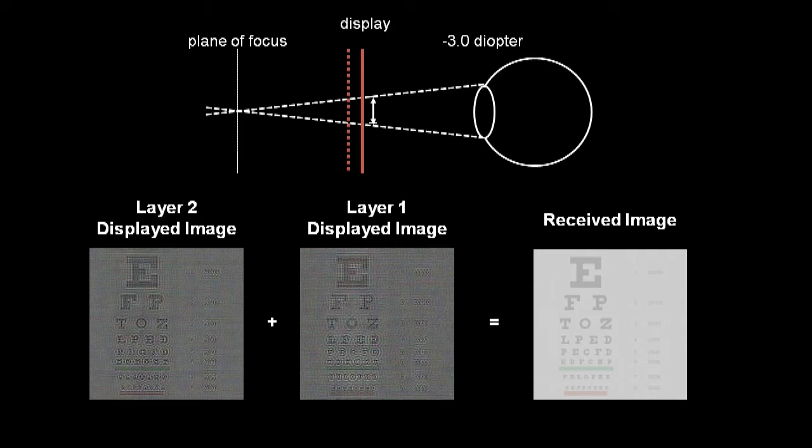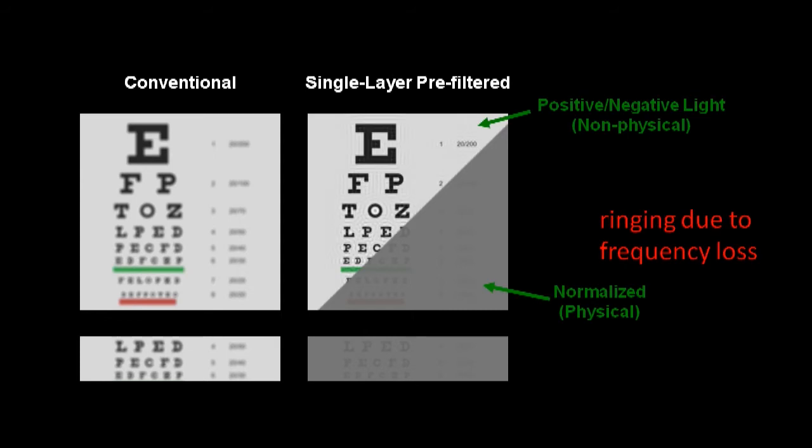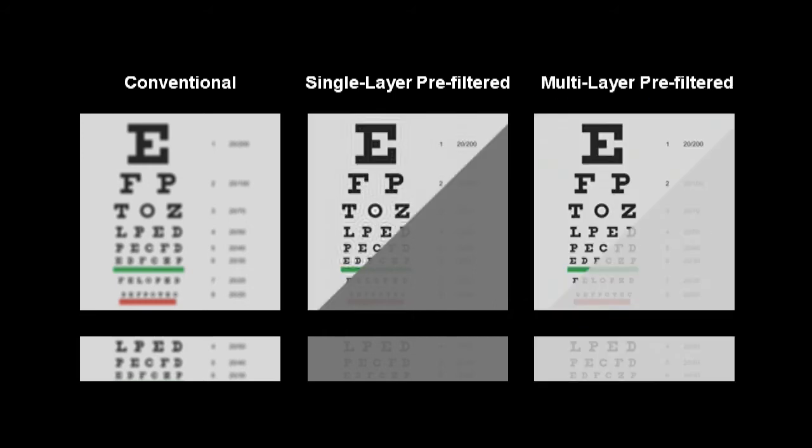In practice, only a small gap is required between the layers. Here we compare the performance of prior single-layer methods versus our multi-layer method. Single-layer methods not only reduce contrast but also produce ringing artifacts. In practice, these artifacts are masked by the low contrast. A second benefit of our method is to eliminate ringing.